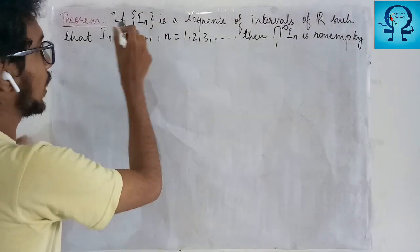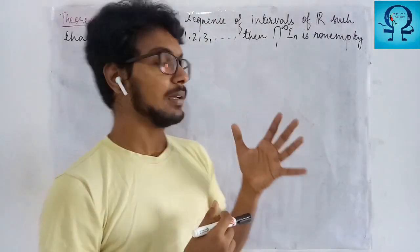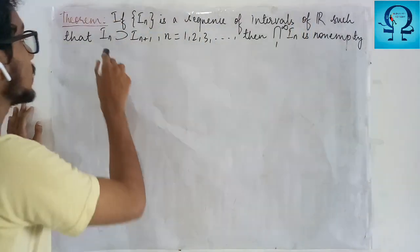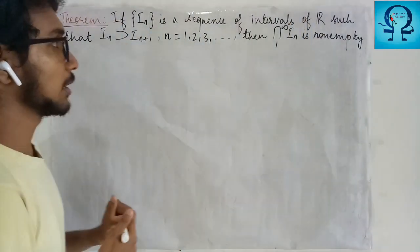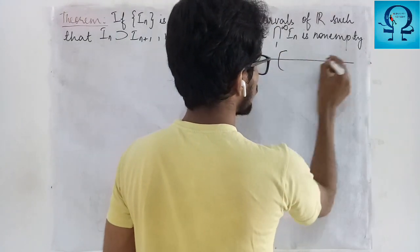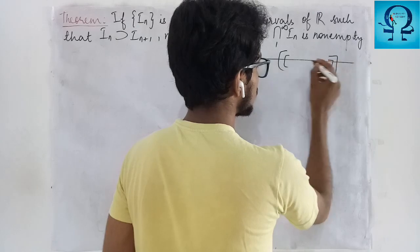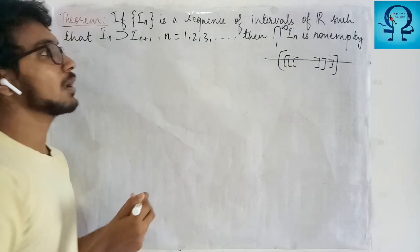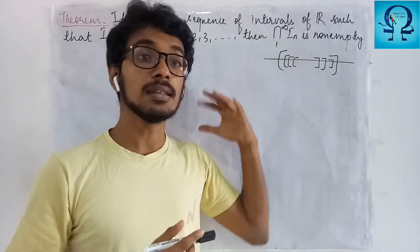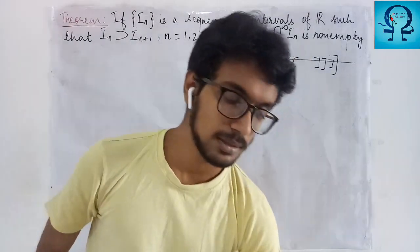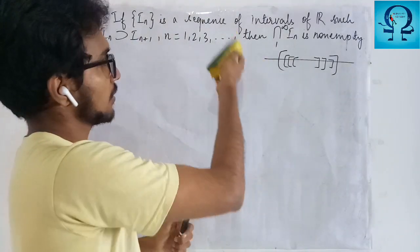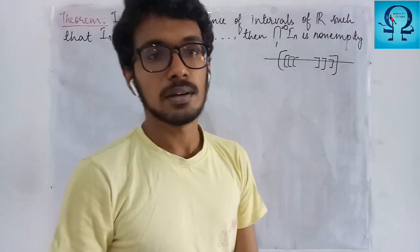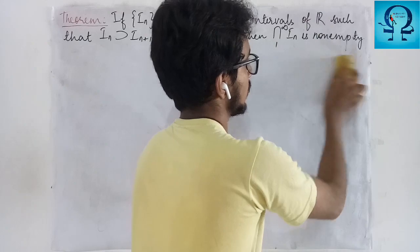It is given that I_n is a sequence of intervals — closed intervals in R — such that I_n contains I_{n+1}. So if this is your I_1, then I_2 is nested inside it, then I_3, then I_4, and so on. With this assumption, we will have to prove that the intersection of all those intervals is non-empty.